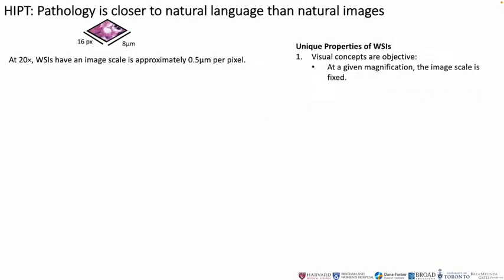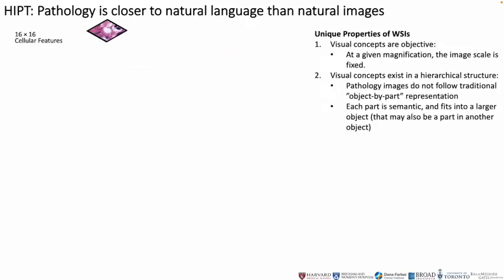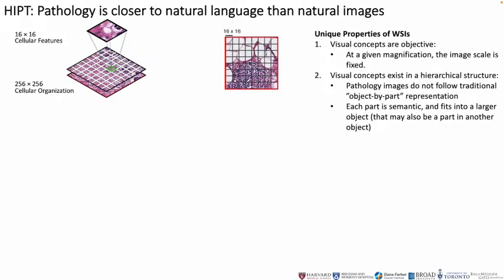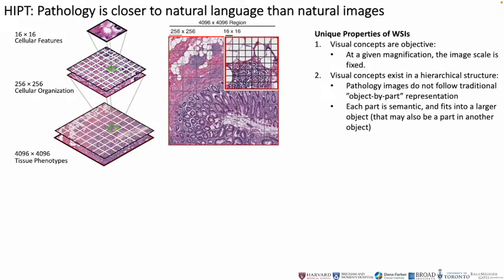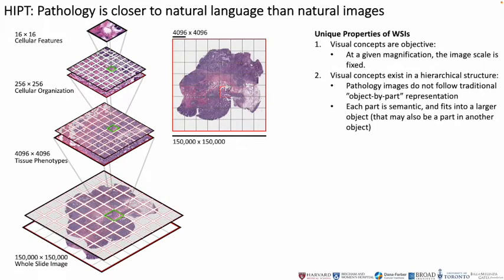Despite these challenges, we know two unique properties about whole slides. First, visual concepts in pathology are objective, as at a given magnification the image scale is always fixed. Second, whole slides exhibit a hierarchical structure of visual tokens across varying resolutions — from 16x16 tokens defining cell activity, to 256-sized image patches defining cell-to-cell interactions, to 4K-sized image regions defining spatial organization of cells and tissue, with the whole slide depicting the overall tissue microenvironment.